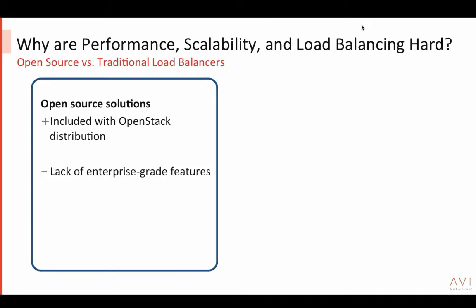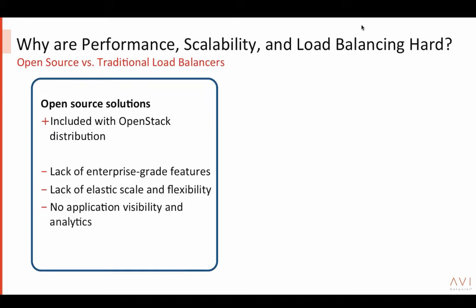However, when planning to deploy production workloads into OpenStack, you need the enterprise-grade features you've been used to — whether it's SSL offload, layer 7 policies, application monitoring and analytics, and the elastic scale and flexibility you expect from a public cloud like AWS. The open source solutions built into OpenStack lack some of these key capabilities that make them ready for production deployment.